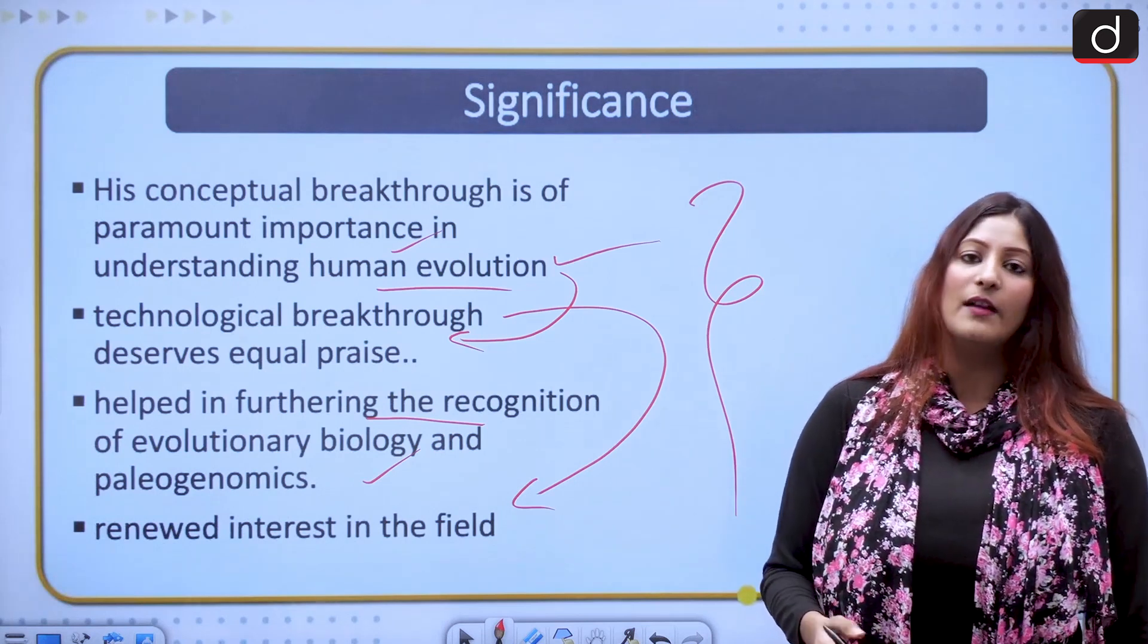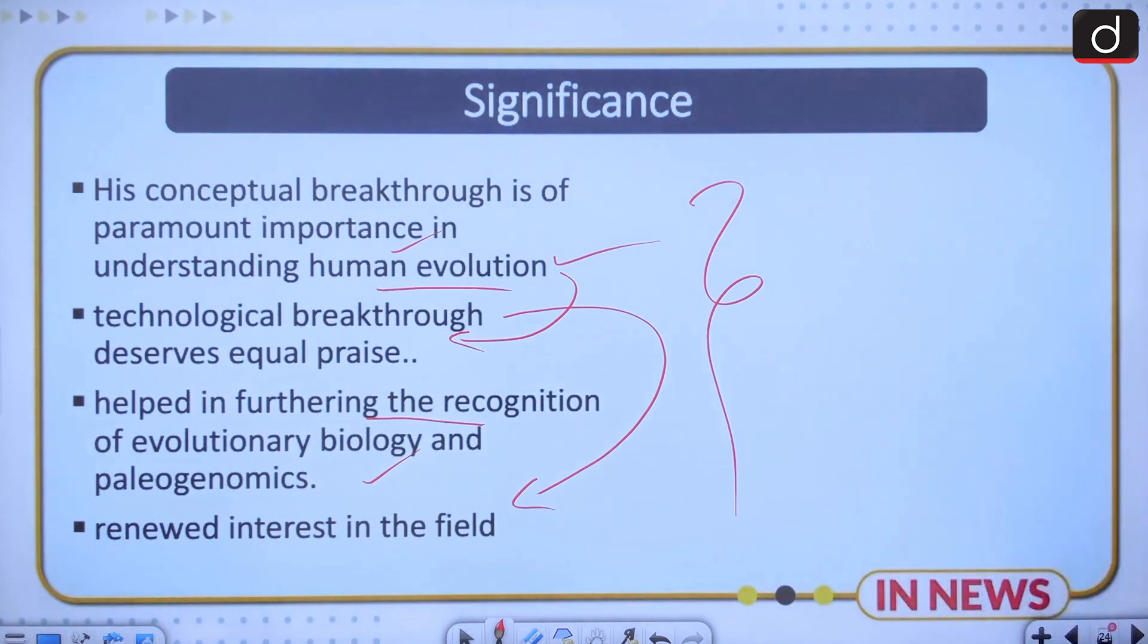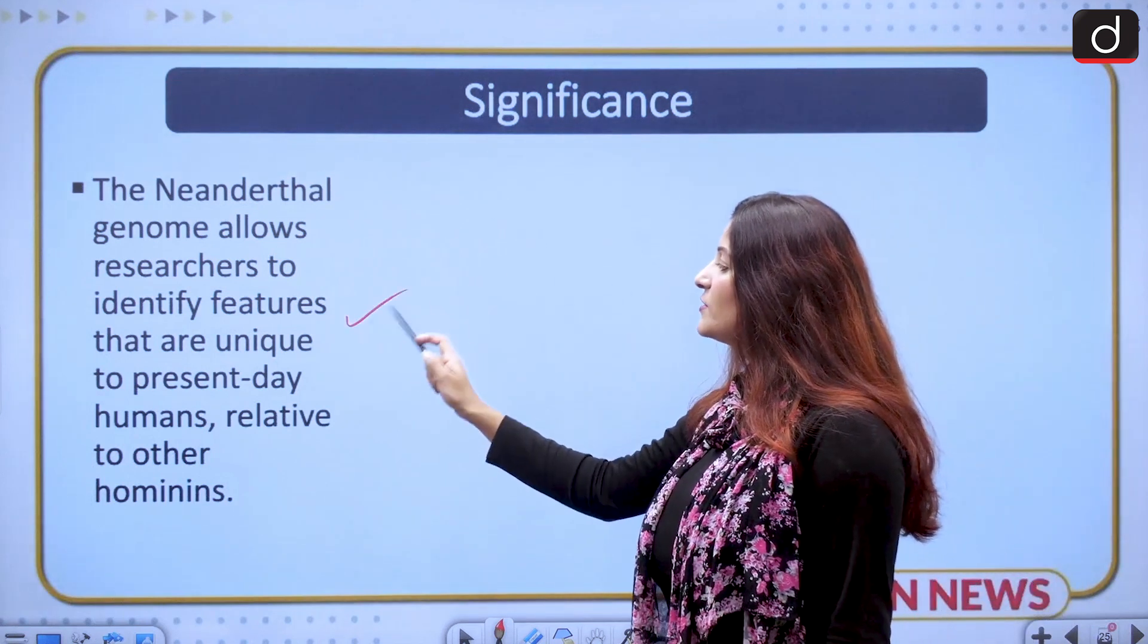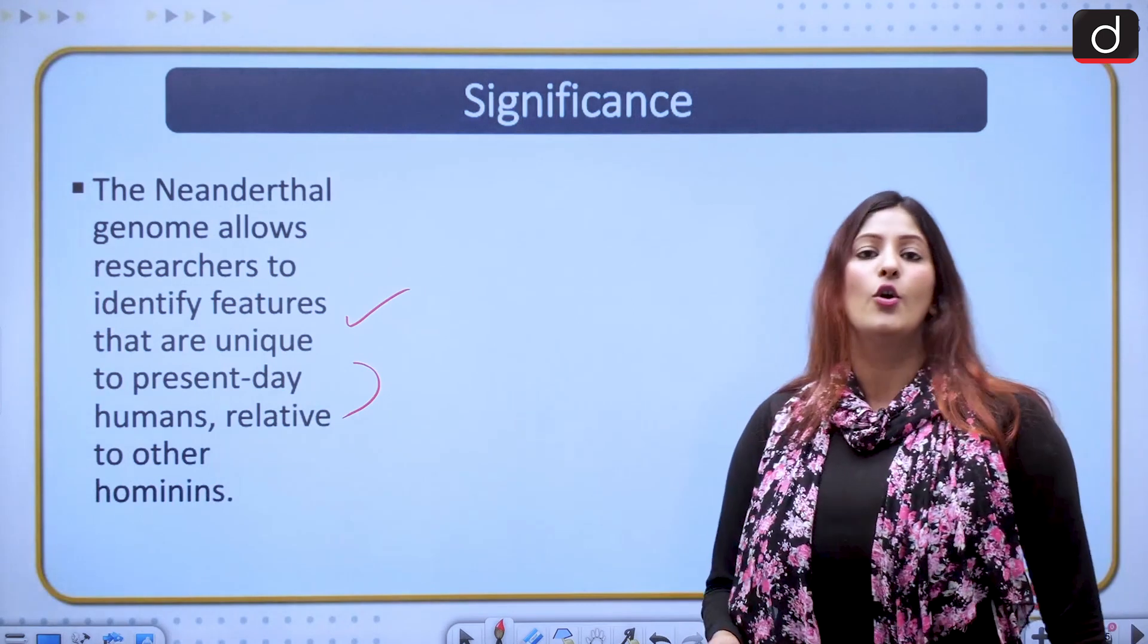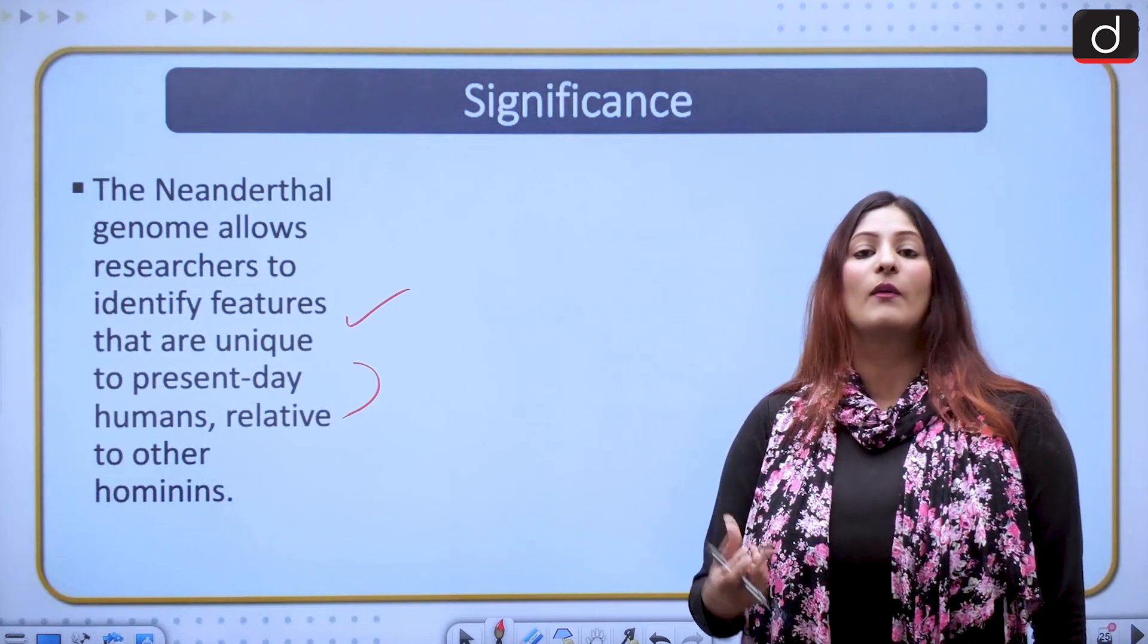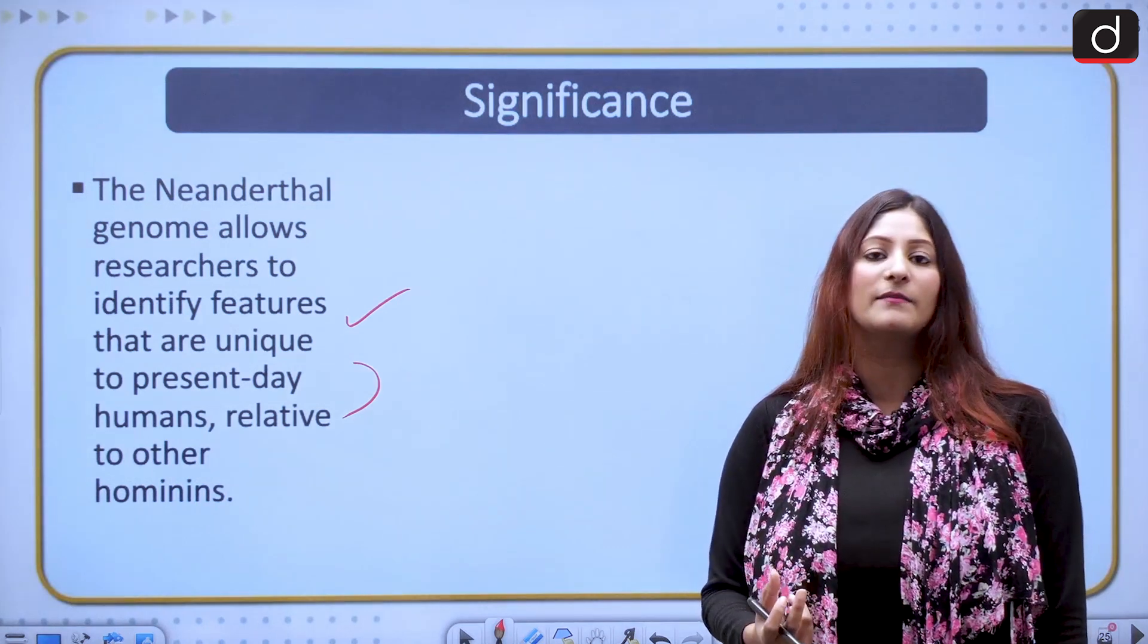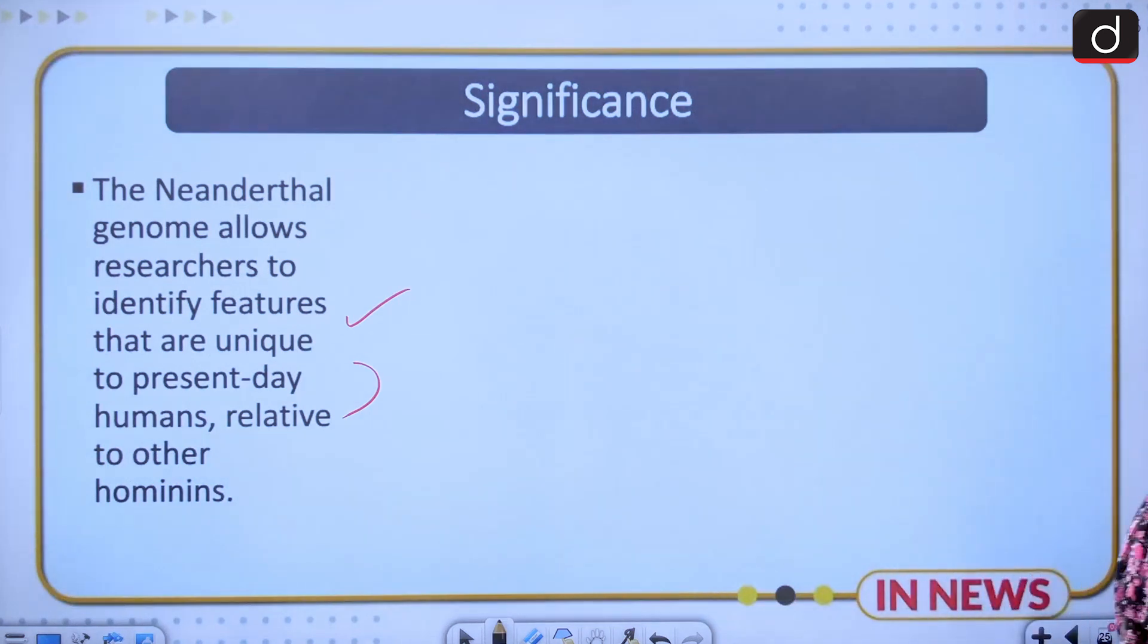The Neanderthal genome allows researchers to identify features that are unique to present humans relative to other hominins. Was there any interbreeding? If there is any interbreeding, what were the genetics that are dominant? What were the genes that are dominant? What genes became suppressed? All this will be very important in the future to know.